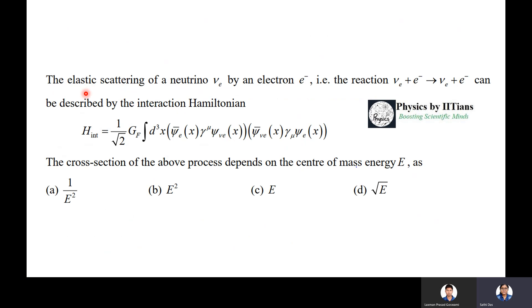Next question. This question is kind of interesting. Many of you may know, many of you don't know. The question is: the elastic scattering of a neutrino, electron neutrino particle by an electron. That is the reaction neutrino plus electron produces neutrino plus electron. This can be described by the interaction Hamiltonian. The cross section of the above process depends on the center of mass energy, how much?